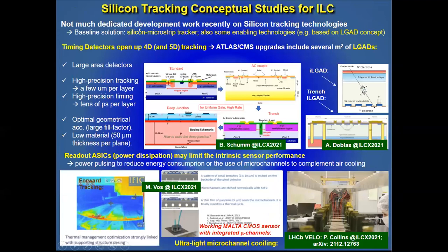In silicon tracking, referring to both ILD and SiD concepts, there is not much new development recently. The baseline solution consists of silicon microstrip tracking. However, the LGAD concept is becoming more and more developed. One of the key elements of the LGAD concept is timing, and we know that ATLAS and CMS upgrades include several square meters of LGAD sensors, which provide both high-precision tracking and high-precision timing. Different concepts are being evaluated: standard, AC-coupled, trench, deep junction, and inverse LGADs, which provide a better fill factor.